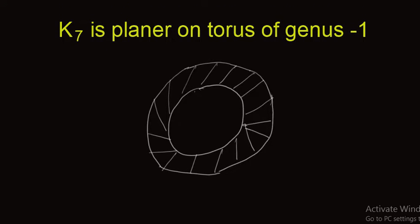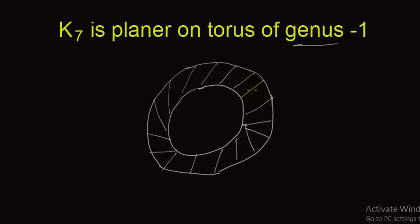What is torus of genus 1? Genus means handle, so this is a shape in which we have one handle. Simply, you can understand that torus of genus 1 is a surface of a donut or a surface of a tire. As shown in the figure, this is a donut — just consider the surface of this donut or surface of the tire; it represents torus of genus 1.